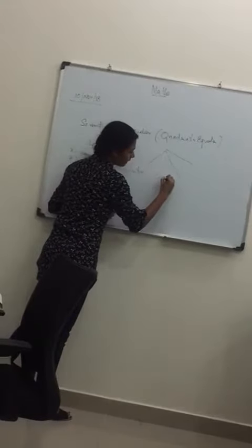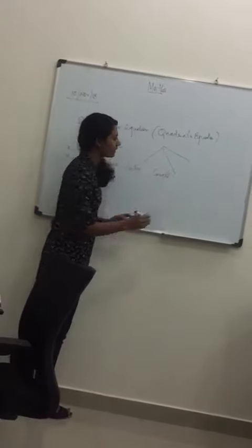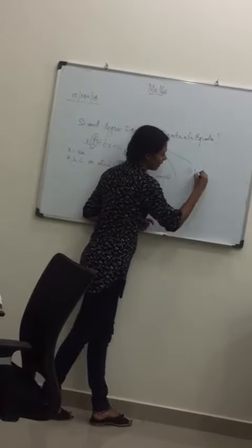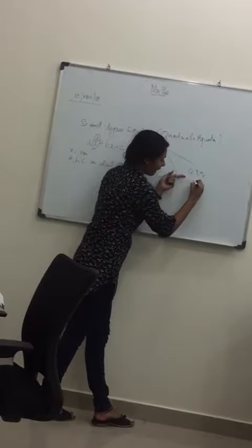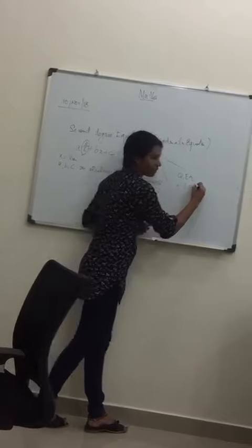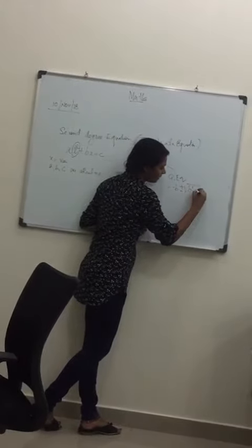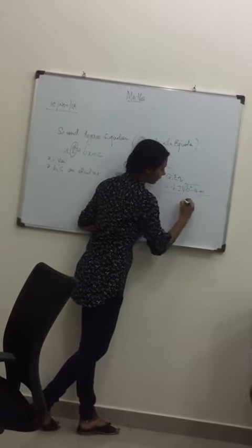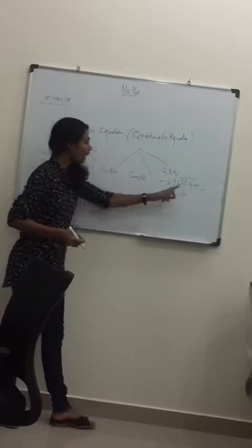Second one is by completing square method. And last method is by using the formula quadratic equation. That is minus b plus or minus root of b square minus 4ac, the whole divided by 2a.